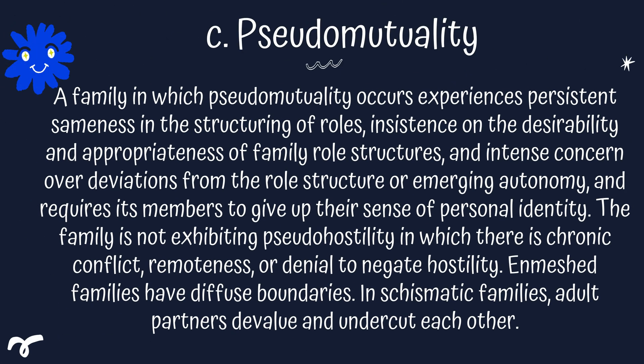The answer is C. Pseudo-mutuality. A family in which pseudo-mutuality occurs experiences persistent sameness in the structuring of roles, insistence on the desirability and appropriateness of family roles and structures, an intense concern over deviations from the role structure or emerging autonomy, and it also requires its members to give up their sense of personal identity. The family is not exhibiting pseudo-hostility, in which there is chronic conflict, remoteness, or denial to negate hostility. Enmeshed families have diffuse boundaries. In schismatic families, adult partners devalue and undercut each other.